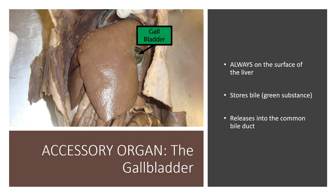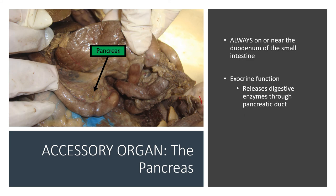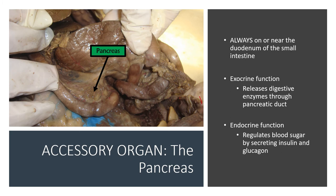The pancreas is always on or near the duodenum of the small intestine for a particular reason: its exocrine function is to release digestive enzymes through the pancreatic duct into the duodenum. It also has an endocrine function by regulating blood sugar, secreting insulin and the hormone glucagon. Glucagon is the hormone that converts glycogen to glucose in the hepatocytes.